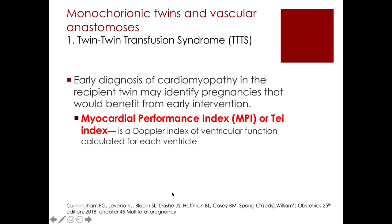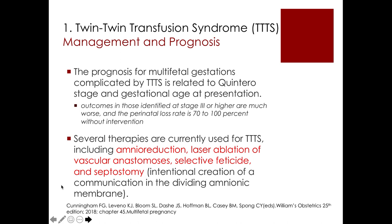Early diagnosis of cardiomyopathy in the recipient twin may identify pregnancies that would benefit from early intervention, assessed using the myocardial performance index (MPI) or Tei index. The prognosis for TTTS is related to the Quintero stage and gestational age at presentation; outcomes at stage three or higher are much worse, with perinatal loss of 70 to 100% without intervention. Therapies include amnioreduction, laser ablation of the vascular anastomosis, selective feticide, and septostomy.